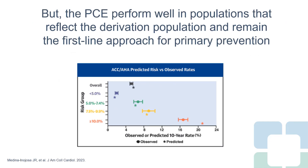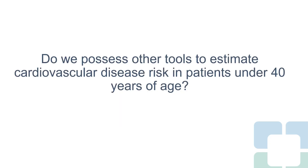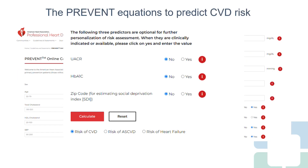The pooled cohort equations do perform well in the populations they were derived from. The issue is that certain populations are excluded, so we have to be considerate of that and think about the entire clinical history. Do we have other tools now to estimate cardiovascular disease risk in patients under the age of 40? The pooled cohort equations are still our guideline-recommended method for estimating risk.